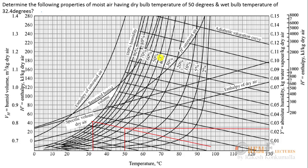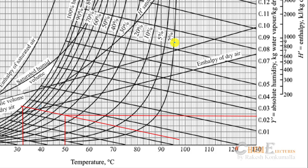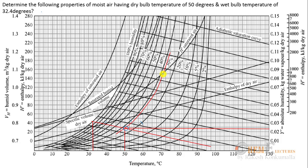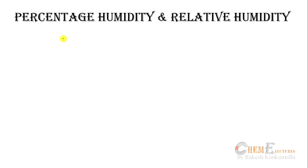Now finding percentage humidity from the chart. The percentage humidity curves range from 2, 5, 10, 20 up to 100%. Our point of intersection lies between the 20% and 30% curves. Drawing a curve parallel to the 30% curve through our point, I can observe that the percentage humidity is approximately 28%.